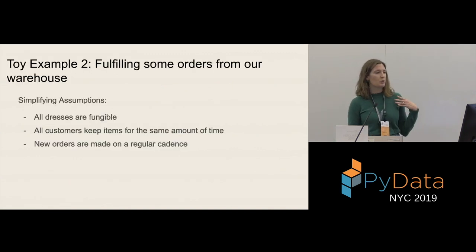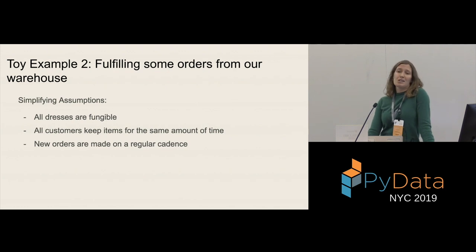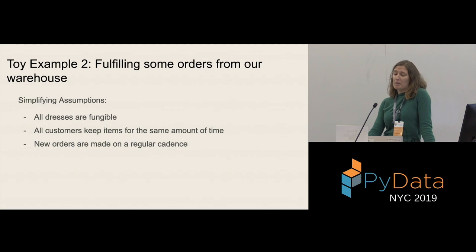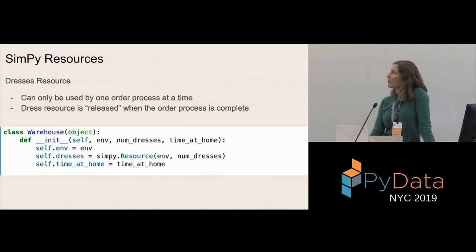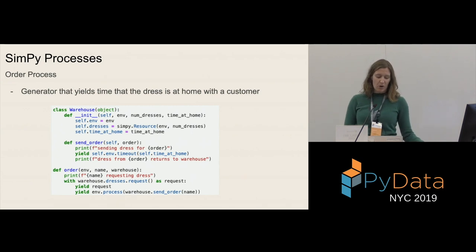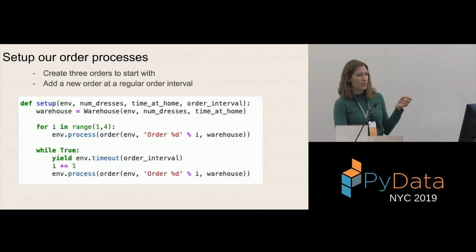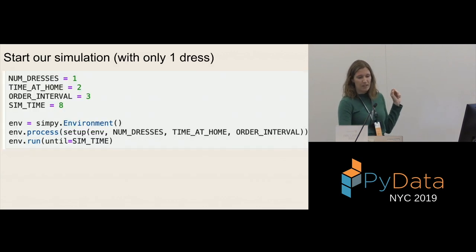The next example is closer to my heart as an RTR employee. We're going to fulfill some orders out of our warehouse with some simplifying assumptions to make it a toy example: all dresses are fungible, all customers are keeping items for the same amount of time, and new orders arrive on a regular cadence. We set up our SimPy resource — the dresses — giving it a number of dresses that get used up by order processes and released when the order is complete. We write out our order process: the order requests a dress from the warehouse, if available the warehouse sends it out, and it's held at home for the time the customer is using the item. We wrap this in a setup with three initial orders, add another order at a regular interval, and then we're ready to run.